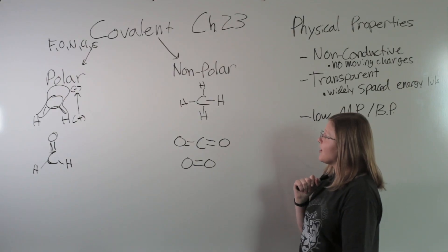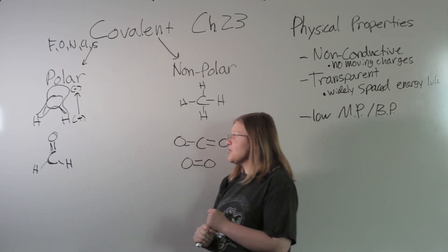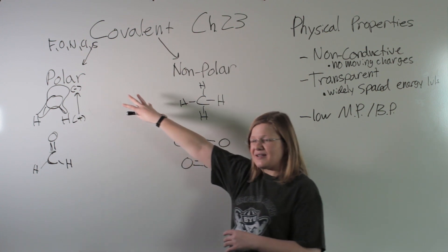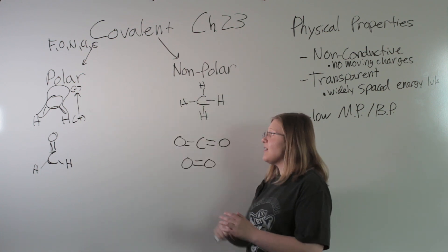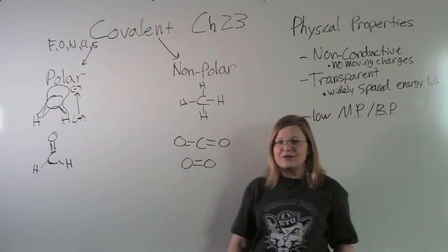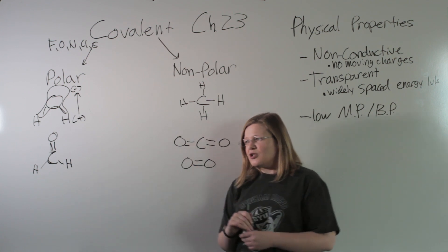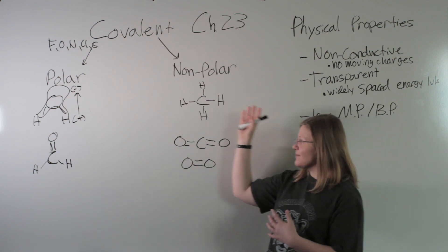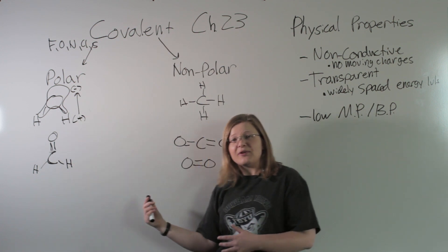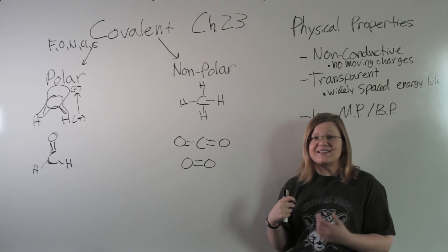With covalent bonding, there are two types: polar and nonpolar. Polar molecules are molecules in which there is a dipole. A dipole means one end of my molecule is negatively charged and one end is positively charged. Polar molecules happen because there is an unequal distribution of electrons in the molecule. This happens because some atoms in the molecule are more electronegative than others — some atoms are more greedy for electrons than other atoms.